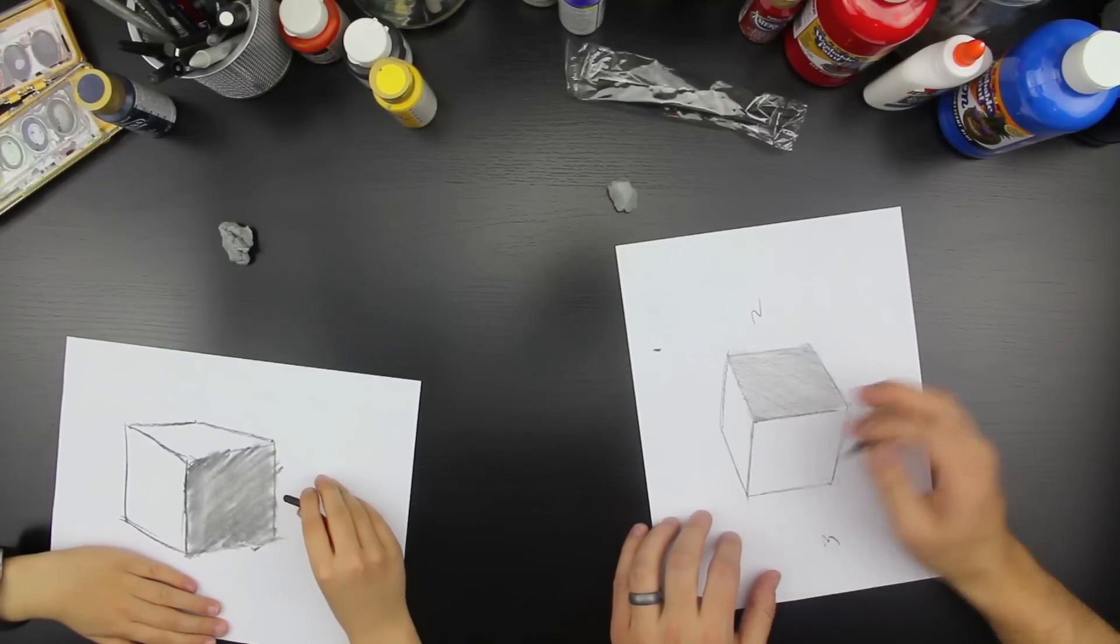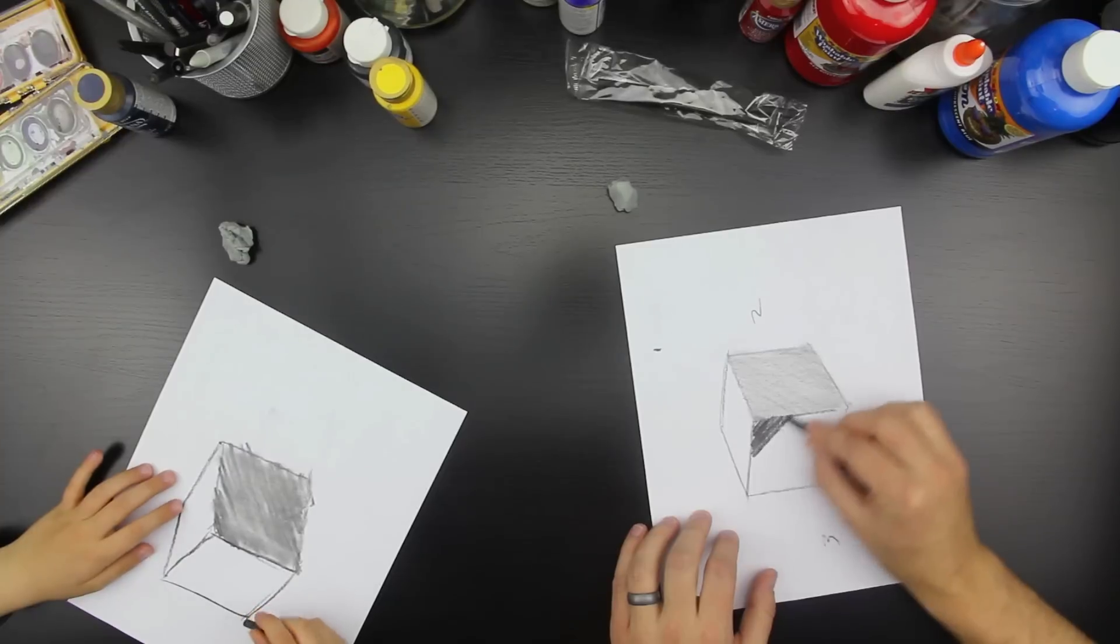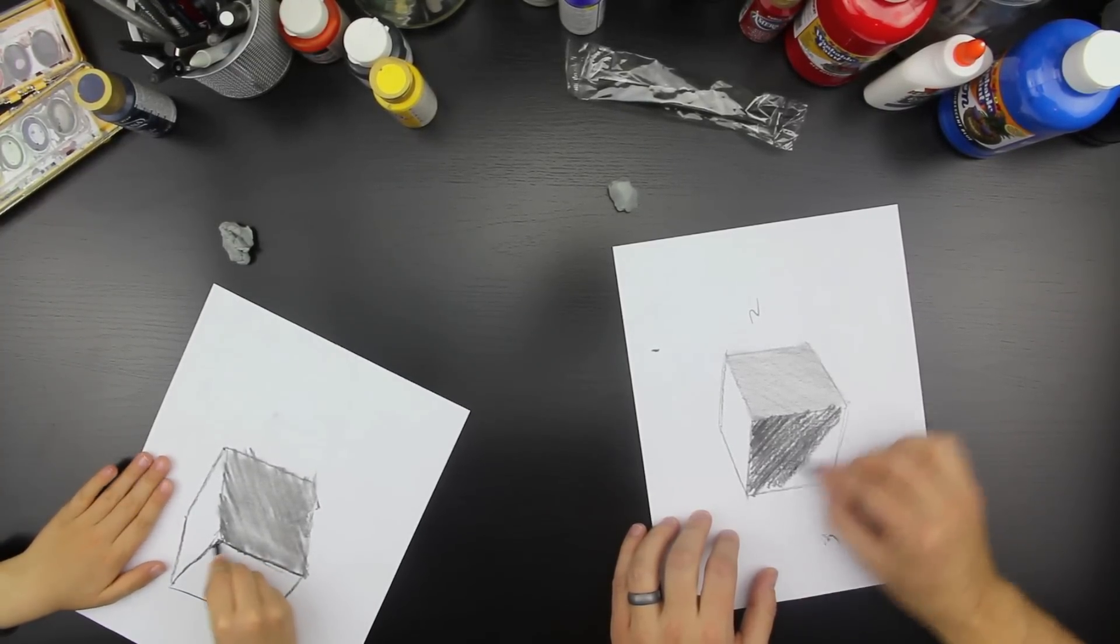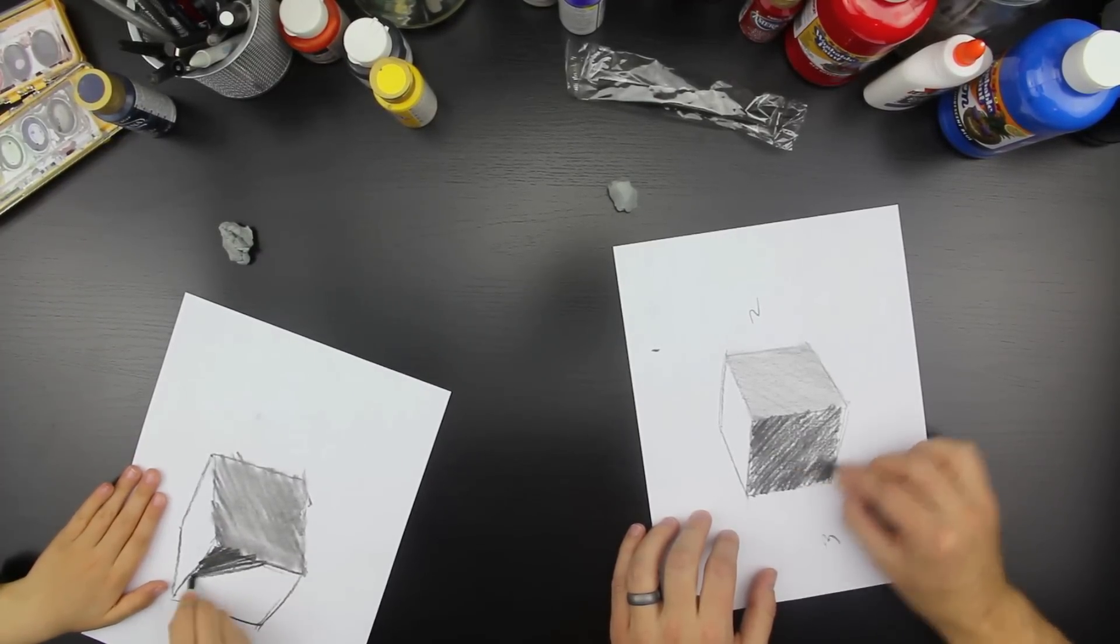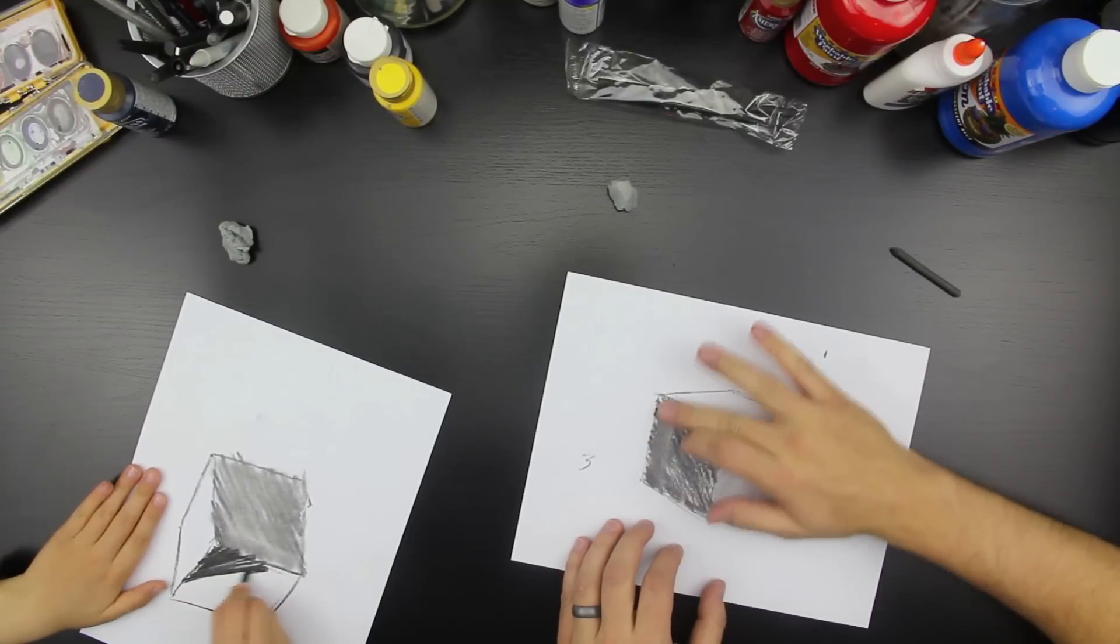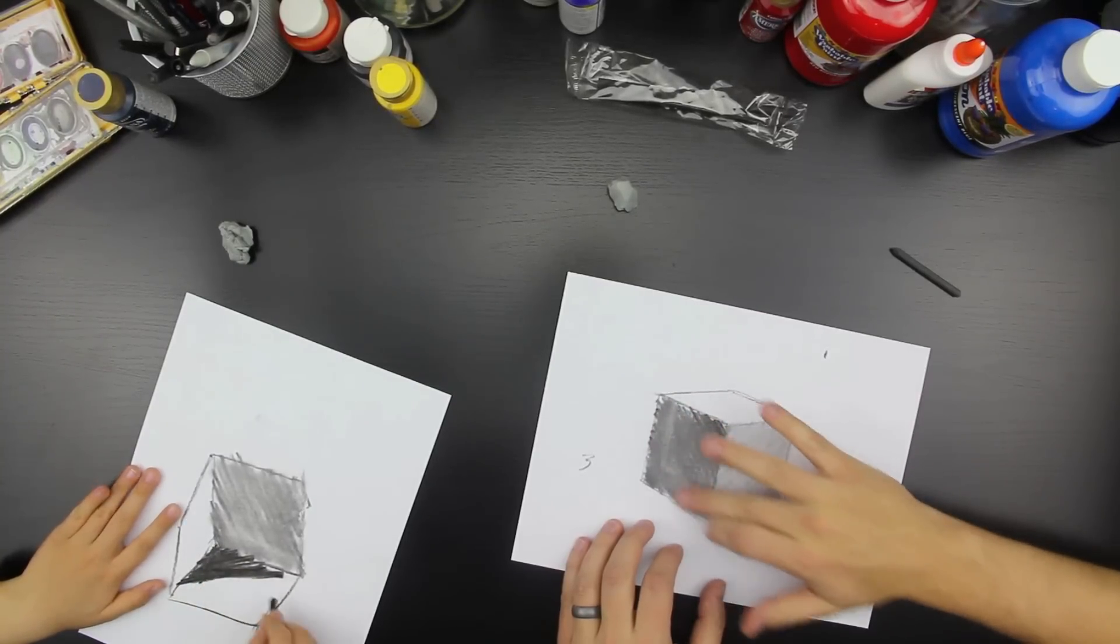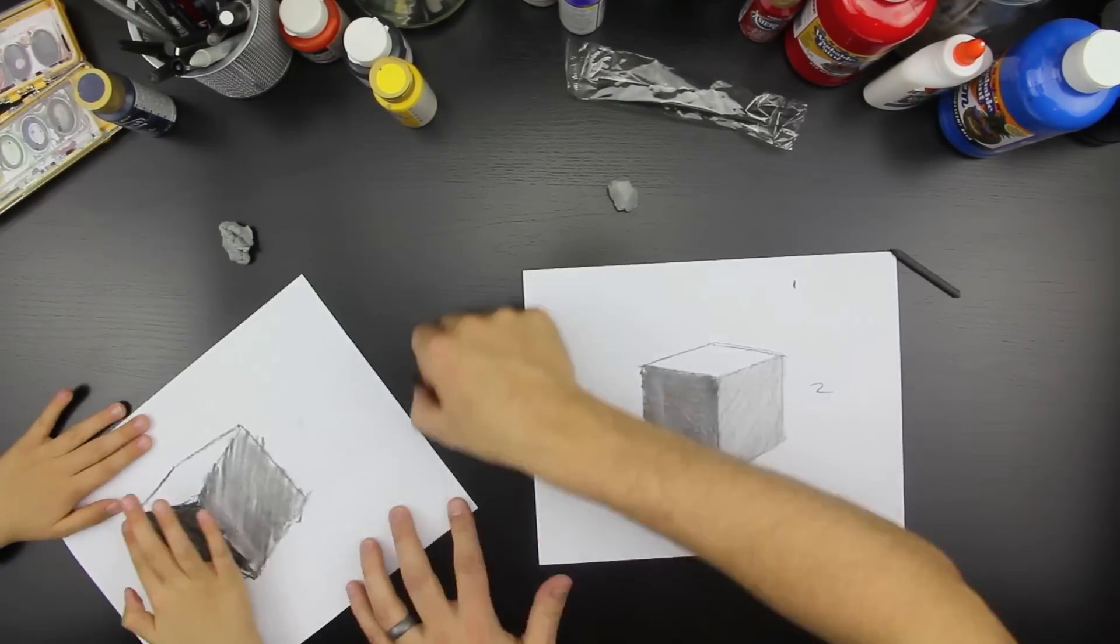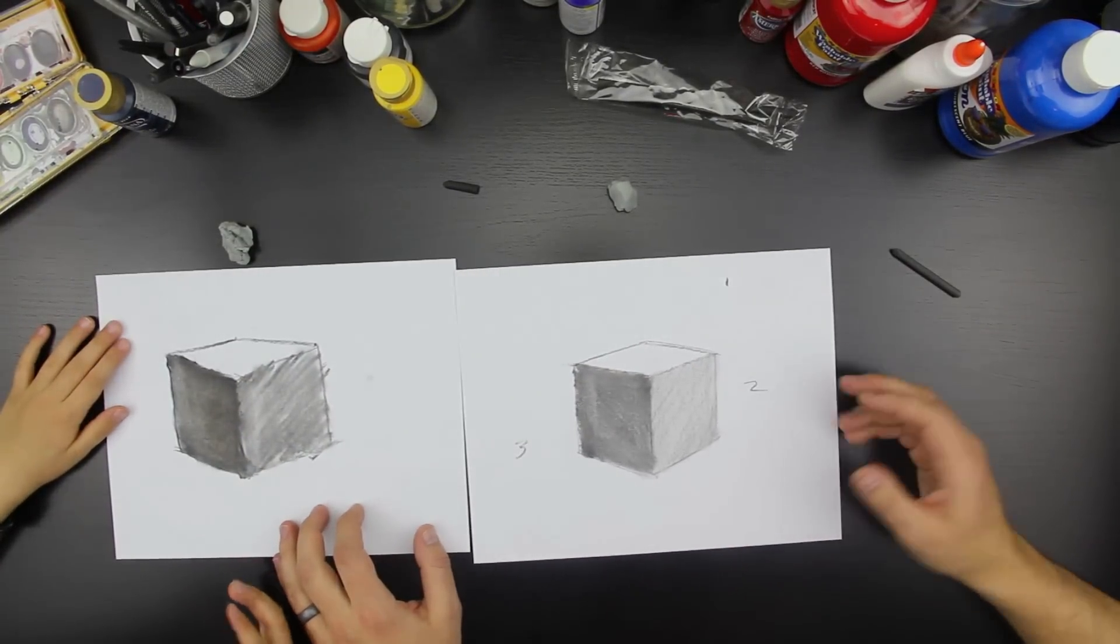Now we're gonna do the darker side over here and do lines all in the same direction and you can do a little darker. And then fill in the box. That is really dark. Good job! Look at that! That's awesome!